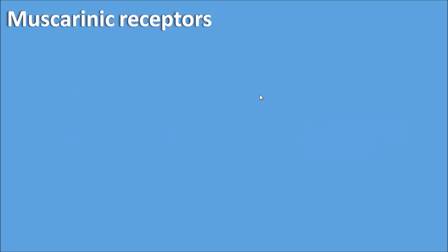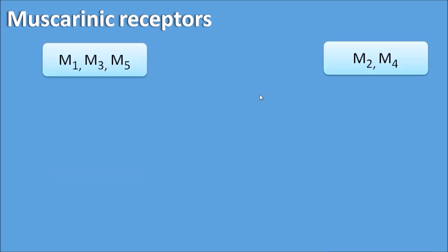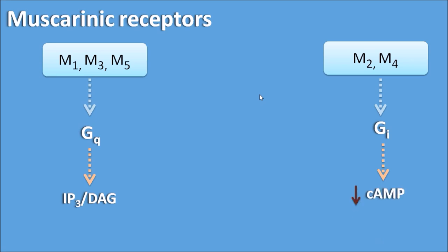Now let us see the muscarinic receptors. Muscarinic receptors can be classified into M1, M2, M3, M4, and M5, and they can be grouped into two groups: M1, M3, M5 and M2, M4. M1, M3, M5 receptors are coupled with Gq-type G protein and are linked to the inositol trisphosphate and diacylglycerol system. M2 and M4 receptors are coupled with Gi-type G protein and are linked to a decrease in cyclic AMP.